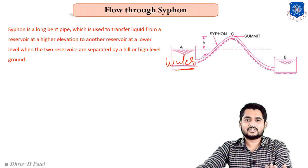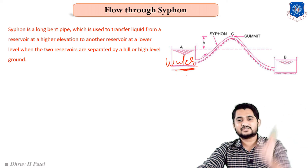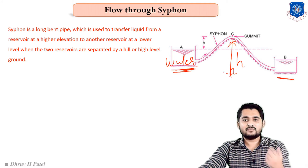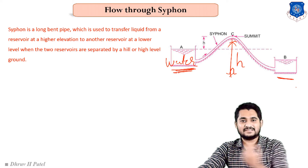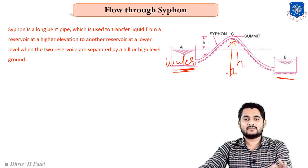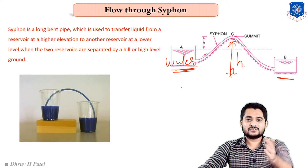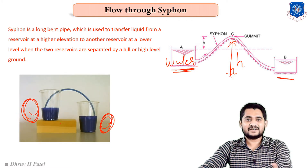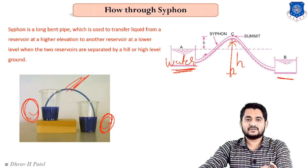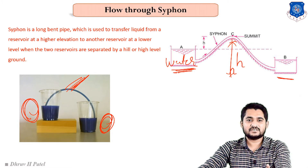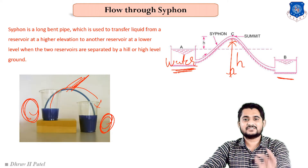In simple language: suppose there is a water storage area far from a village, and between the water storage area and the village there is a hilly region. Without using any electricity or any external device, we can connect them by a siphon and transfer fluid from higher elevation to lower elevation. According to the sketch, water level is higher on the left-hand side and lower on the right-hand side, and with the use of the siphon, water is transferred from left to right — this is the siphon.